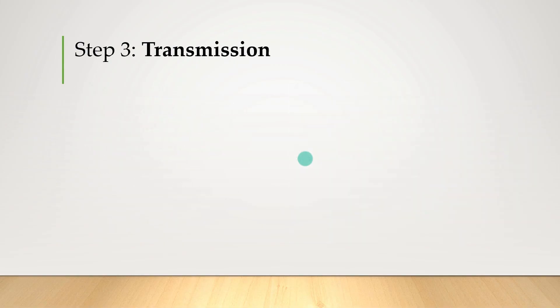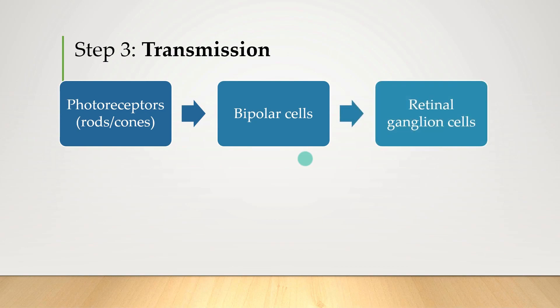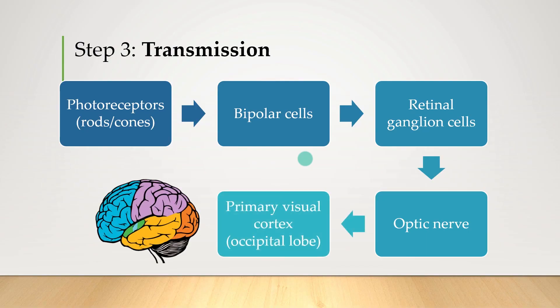And the third step, of course, is transmission, which is when information from those photoreceptors makes its way to the brain via bipolar cells, and then the retinal ganglion cells, and then optic nerves, and finally to the occipital lobe, where the visual cortex is. And of course, you know which part of the brain that's located, right? Yeah, that orange bit right there.